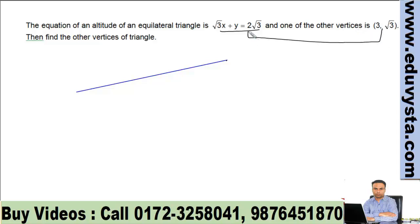The point (3, √3) must satisfy this line equation, so suppose (3, √3) is somewhere here. Now since this is the altitude of the triangle, we can construct the triangle like this, or we can construct the triangle like this.